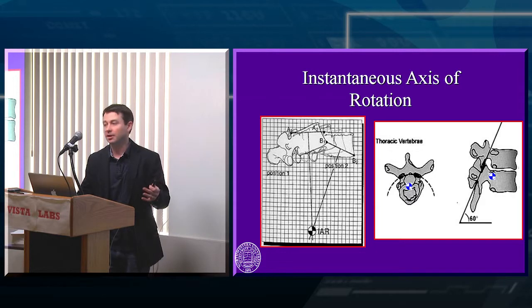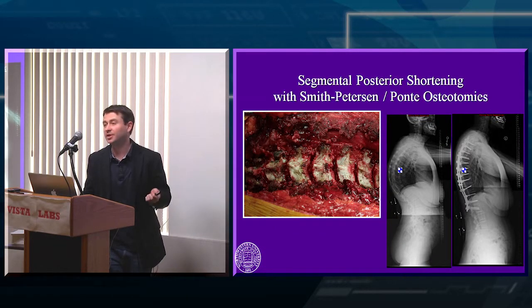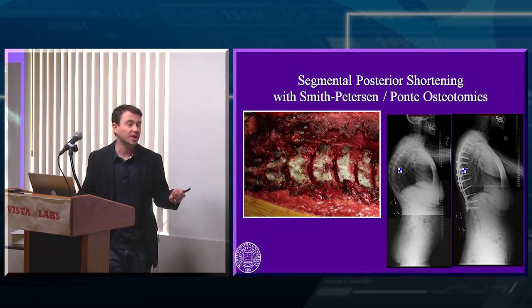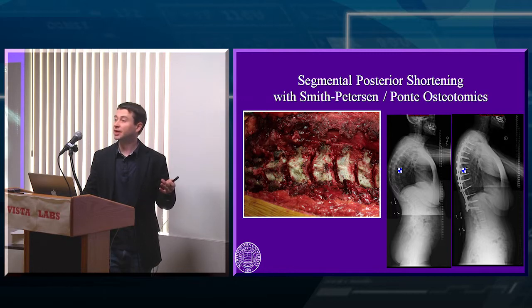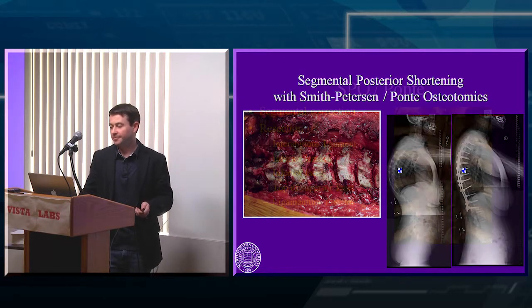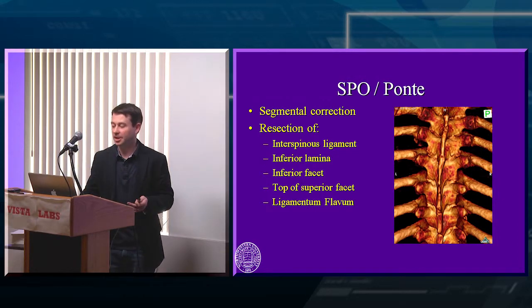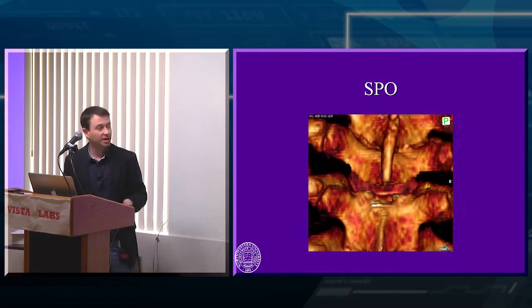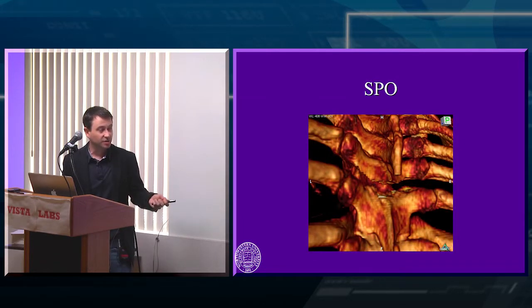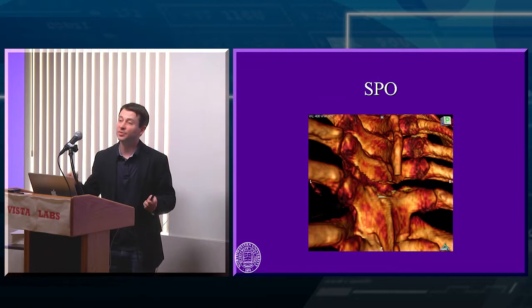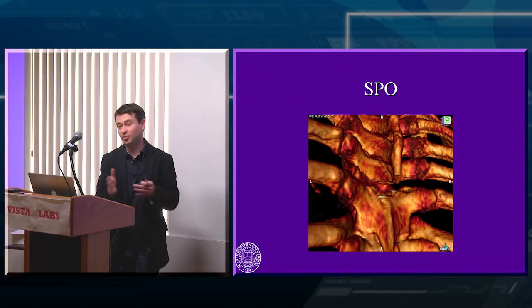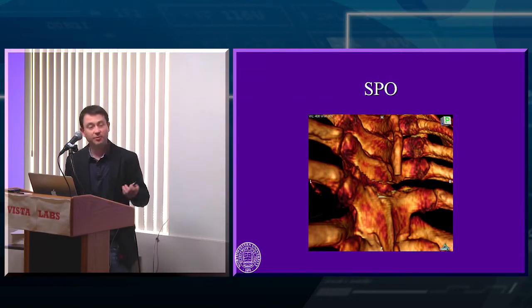The most common approach is the Smith-Petersen osteotomy, which we practiced in the lab. These are small posterior segmental osteotomies using the IAR to correct the spine — removing the interspinous ligament, lamina, and facet. The key is that the foramen must be widely open at the end so that the tip of the superior facet is not compressing down against the nerve when you correct the spine.